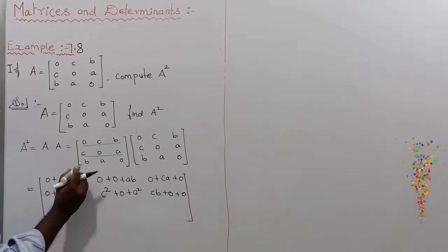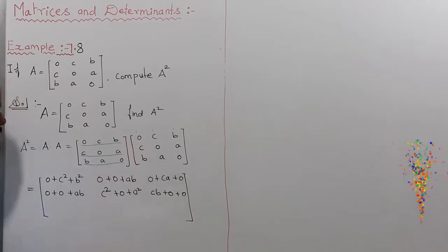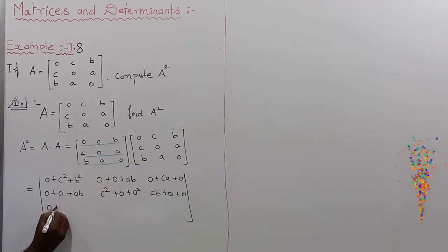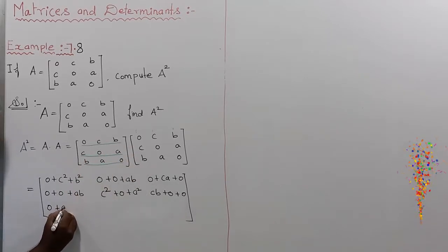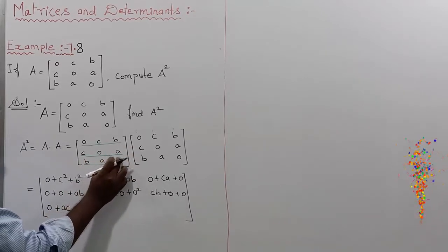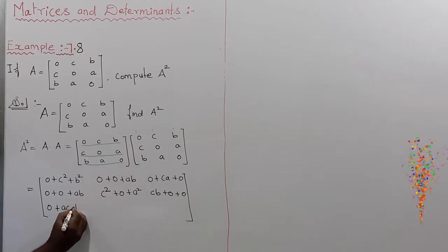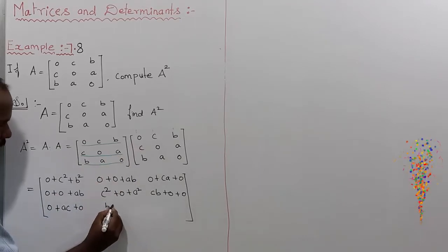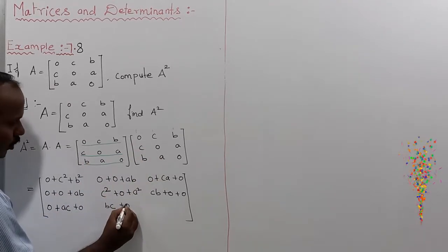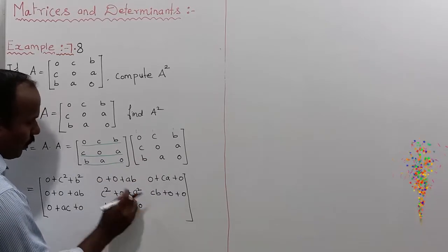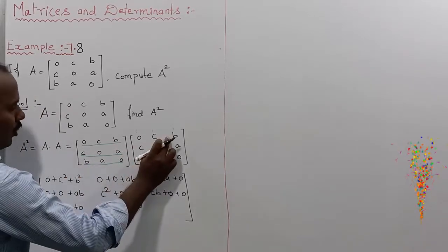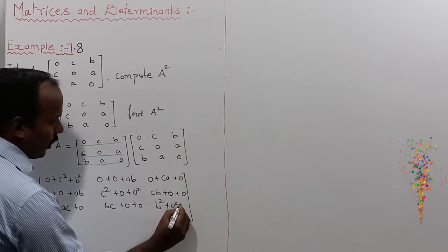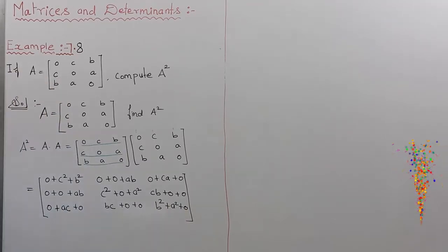Now the third row. Third row is [b, a, 0]. For (3,1): b×0 = 0, plus a×c = ac, plus 0×b = 0, giving ac. For (3,2): b×c = bc, plus a×0 = 0, plus 0×a = 0, giving bc. For (3,3): b×b = b², plus a×a = a², plus 0×0 = 0, giving a²+b². Third row completed.